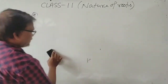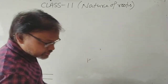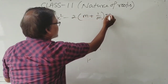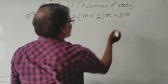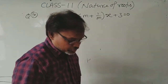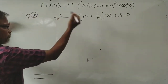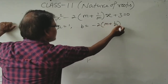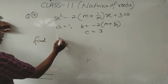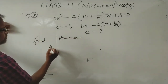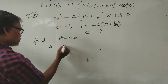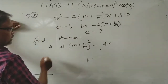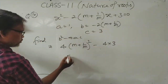Question number 10: show that the roots of the equation x² − 2((n+1)/n)x + 3 = 0 are real for all real values of n. By comparing: a = 1, b = −2(n+1)/n, c = 3. Find B² − 4AC: it equals [2(n+1)/n]², minus 4(1)(3), which simplifies to 4(n+1)²/n² − 12.